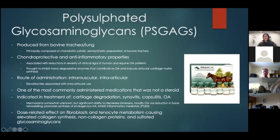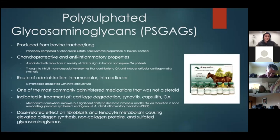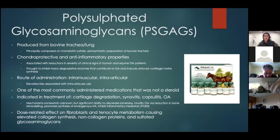The first supplement to discuss is polysulfated glycosaminoglycans — PSGAGs. The most commonly used product, and in my opinion a very good therapy both preventatively and for treatment, is Adequan. This substance is produced from cow tracheas and lung, is principally composed of chondroitin sulfate, and is a semi-synthetic preparation of bovine trachea.